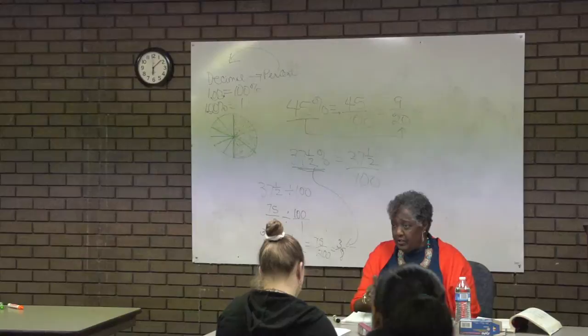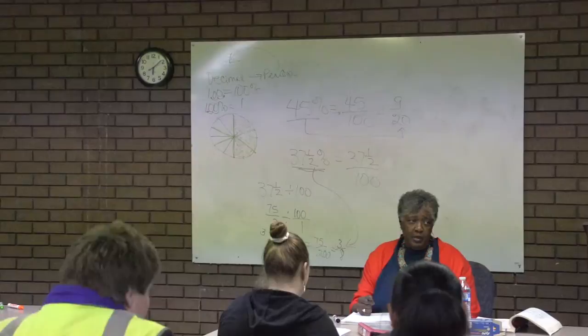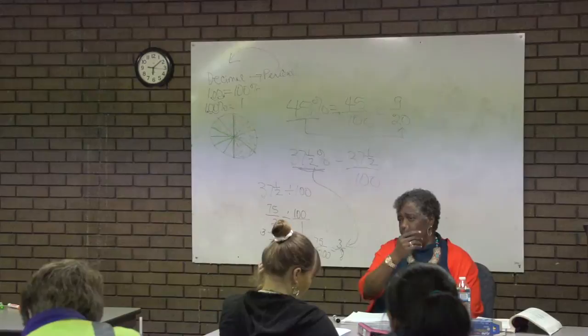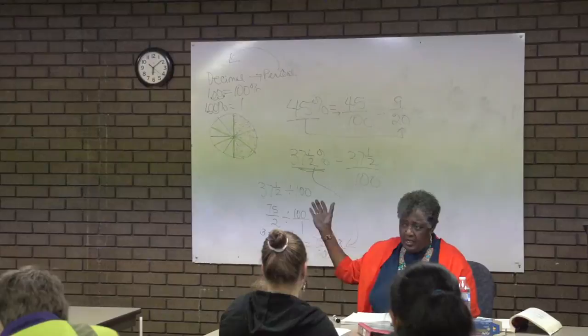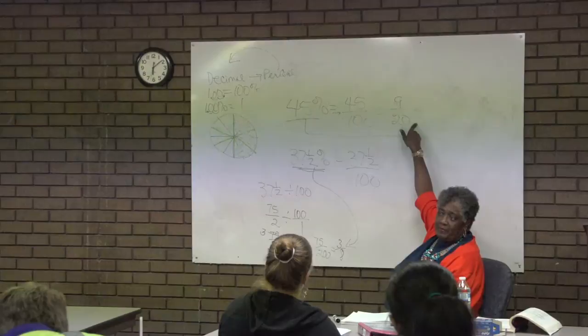To change a fraction to a decimal, you're going to always divide the denominator into the numerator. To change a decimal to a percent, you're going to always move the decimal point over two places to the right and add a percent sign. To change a percent back to a decimal, you're going to always move it back two times and take off the percent sign. To change a percent to a fraction, you're going to always divide it by a hundred. But if it's a whole number, you can divide it by a hundred just by sticking it here and then reducing it. If it's a fraction, you have to actually divide it by a hundred.